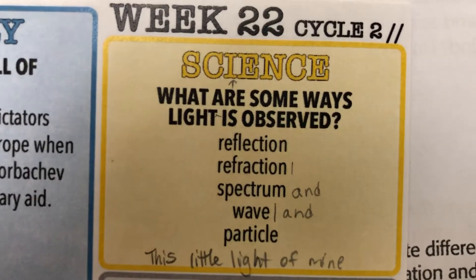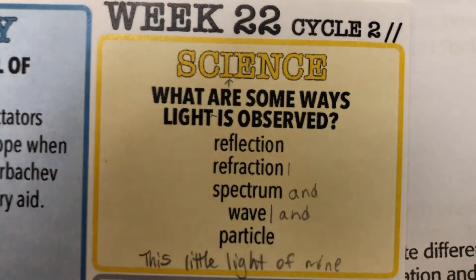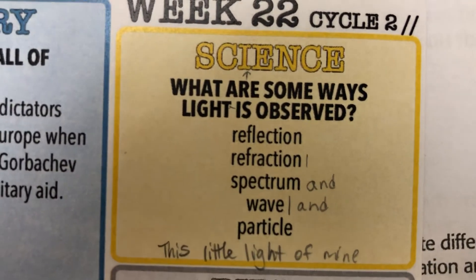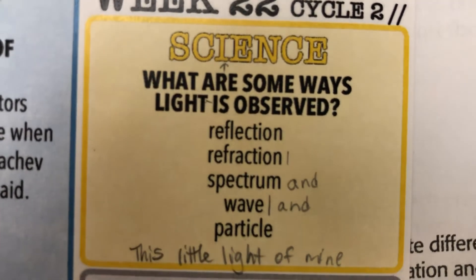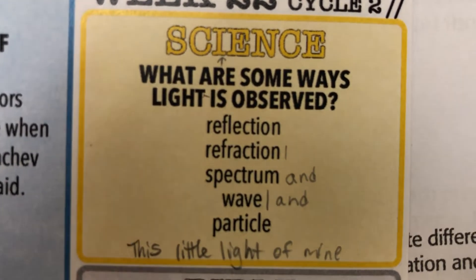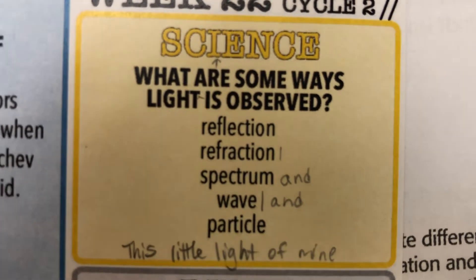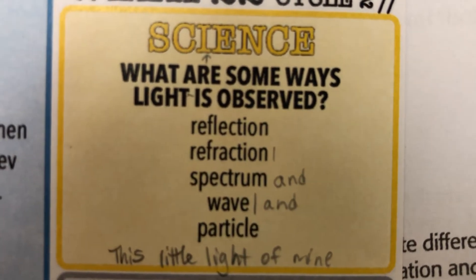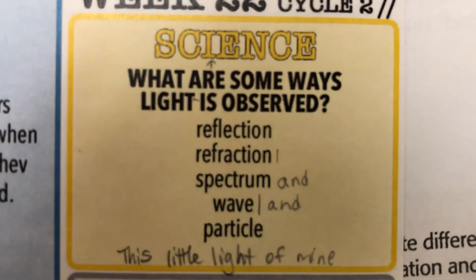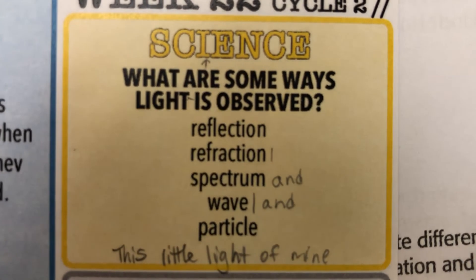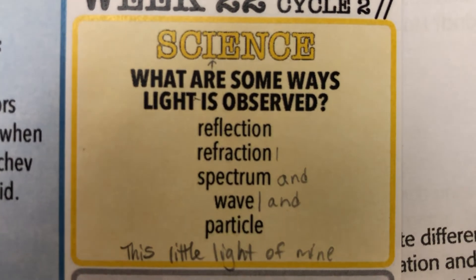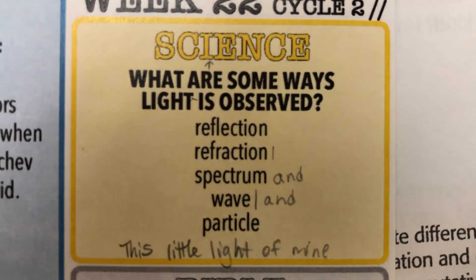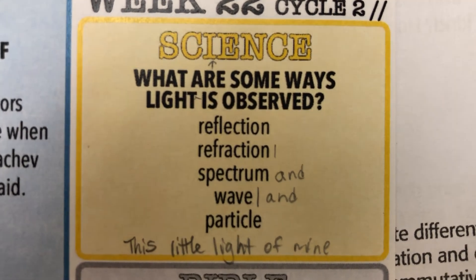What are some ways light is observed? Reflection, refraction, spectrum and wave and particle. Some ways light is observed.